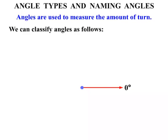Now we can classify angles as follows. Let's start turning this red arm. An angle there it's created, that's known as an Acute Angle. These are angles between 0 and 90 degrees.